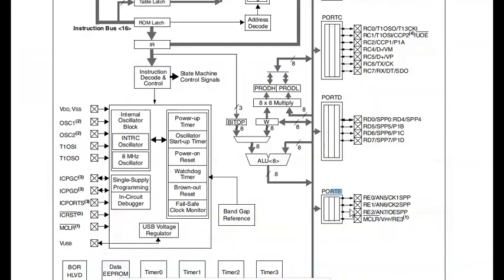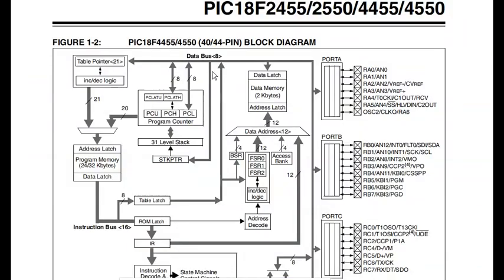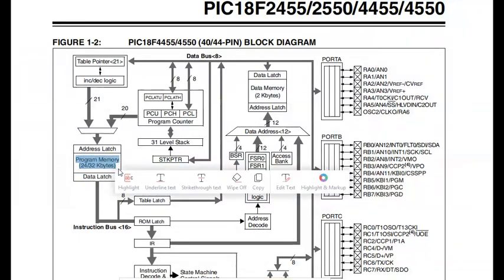Port A has 7 pins, Port B has 8 pins, Port C has 7 pins, Port D has 4 pins, and Port E consists of 4 pins. The memory section has data memory of 2 KB and program memory of 32 KB.